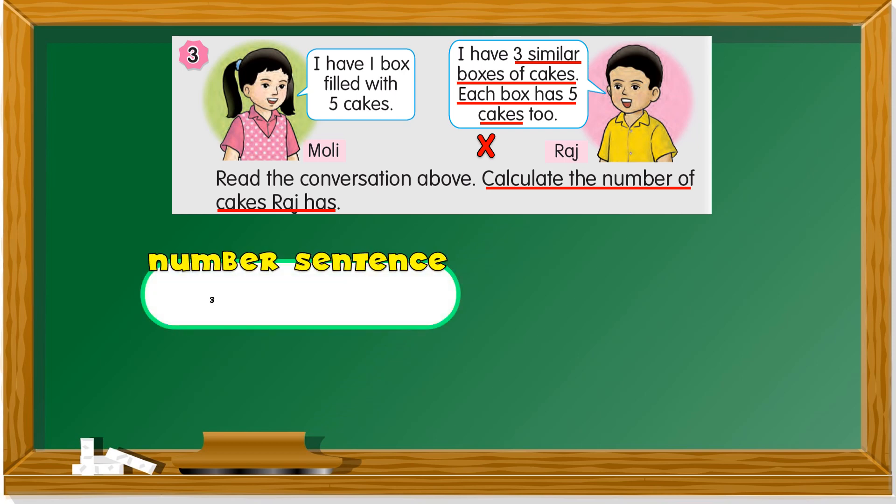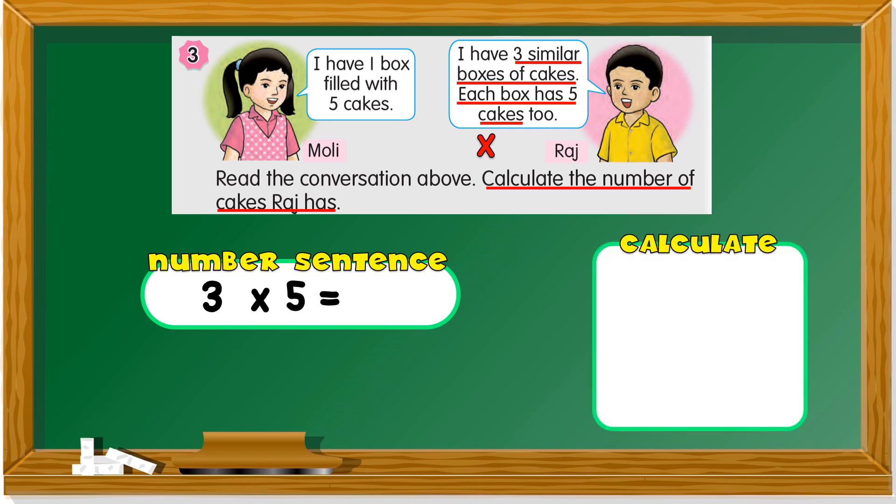Number sentence here is 3 × 5 = ? We can do the calculation. We can do the chant or sing it. The multiplication of five. The song is according to Baba Black Sheep. It's five, ten, fifteen. Five, ten, fifteen. Three fingers. What's the answer? Five, ten, fifteen. Each box has five cakes. Three boxes. Raj has fifteen cakes.